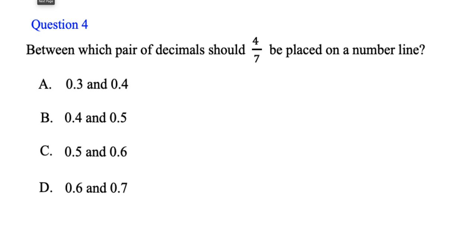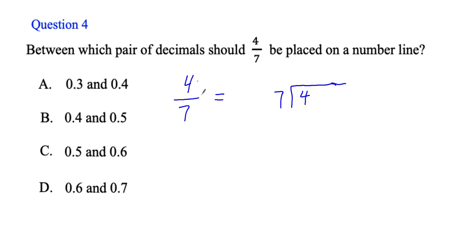Question four: between which pair of decimals should four sevenths be placed on a number line? This is a tricky one. What I'm going to do is change four sevenths to a decimal using long division. You rewrite four sevenths as seven dividing into four. The denominator goes on the outside and the numerator goes on the inside. How many times does seven go into four? It doesn't — so I put a zero.